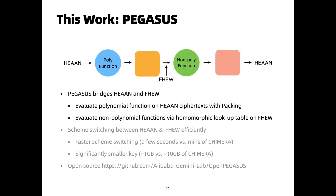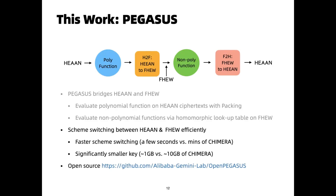In this work, we propose Pegasus, a framework that bridges the HEAN scheme and the FHEW scheme to evaluate both polynomial and non-polynomial functions on encrypted values. By doing so, we can efficiently evaluate polynomial functions in HEAN mode, and switch to FHEW mode for non-polynomial functions using lookup tables. Pegasus is shipped with a more efficient scheme-switching method, and our key size is significantly smaller than that of Chimera. We implement Pegasus on top of Microsoft's SEAL library, and our code is publicly available.